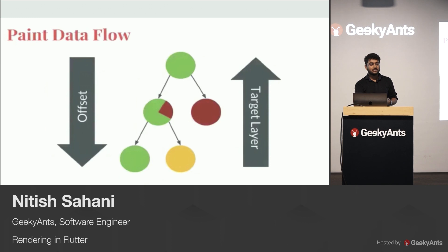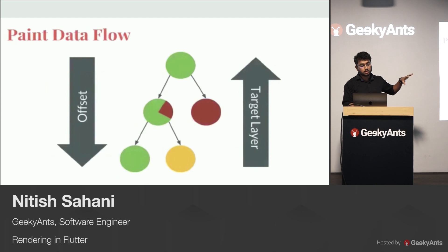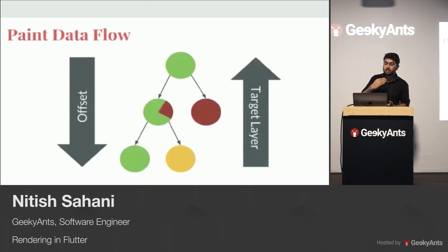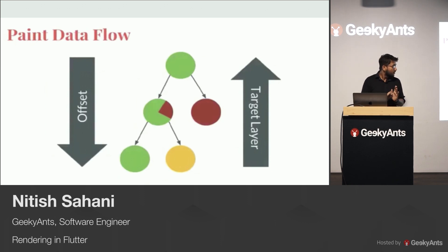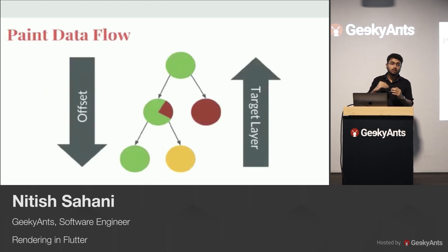Now let's see what the actual paint data flow looks like. It's not just offsets being sent down the tree — there's stuff coming back up in a one-pass walk, in particular the target layer. The layer you draw into — your children tell you what the next part of the painting will be. So you tell your children to paint themselves in a certain place, and a child can tell its parent layer to continue painting that layer after it's done. In programming terms, it's a one-pass down-up algorithm, going up and down based on paint order.